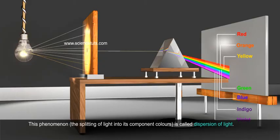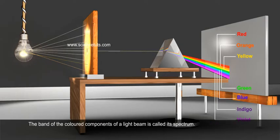This phenomenon, the splitting of light into its component colours, is called dispersion of light. The band of the coloured components of a light beam is called its spectrum.